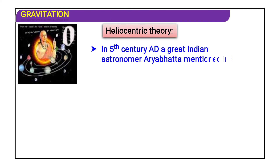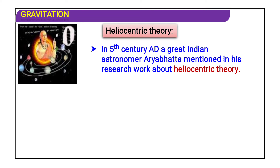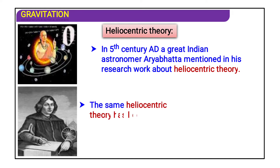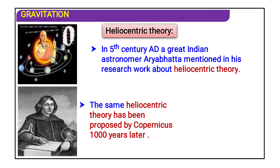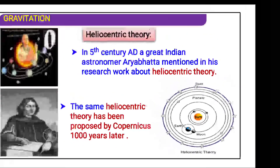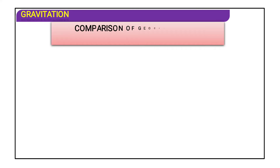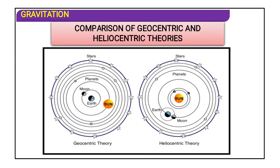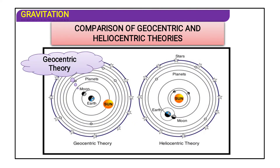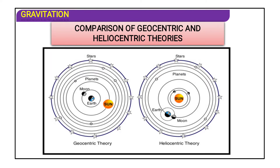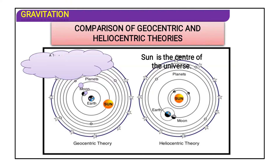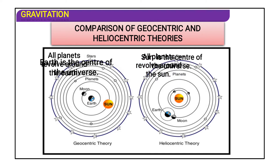The heliocentric theory was introduced by Aryabhata in the 5th century A.D. This great Indian astronomer mentioned heliocentric theory in his research work. The same heliocentric theory was proposed by Copernicus a thousand years later. Heliocentric theory means the sun is at the center, and all remaining stars and planets revolve around the sun. In geocentric theory, earth is in the middle; in heliocentric theory, the sun is in the middle.